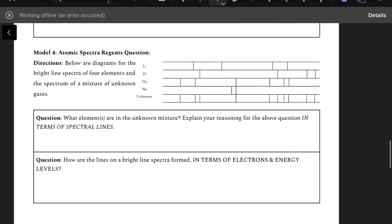Then our last section, model four, you only need this picture. It is a spectral regions question. So you are given this unknown sample of gas and four other known elements. Your job is to figure out which elements are in that mixture, and you will be able to determine that by matching up every single line. And that is those last two questions.